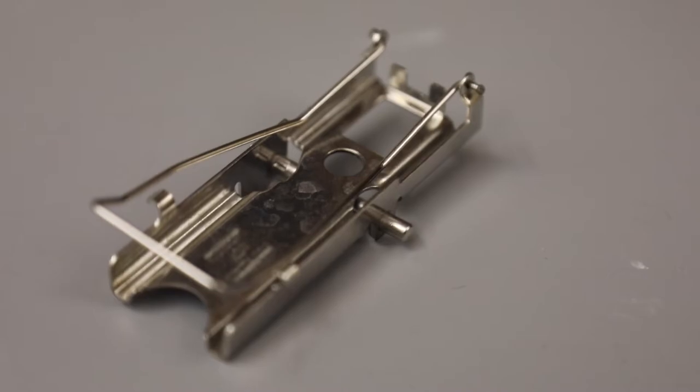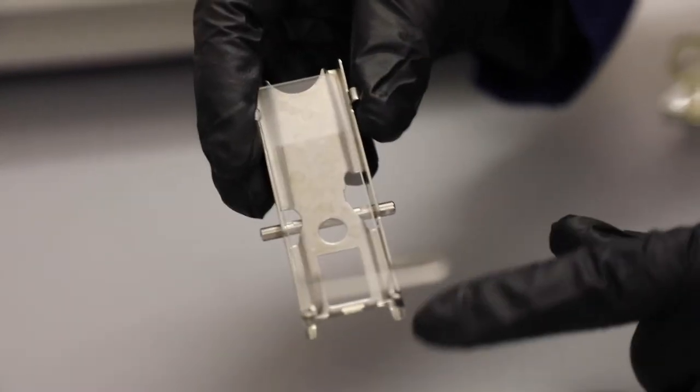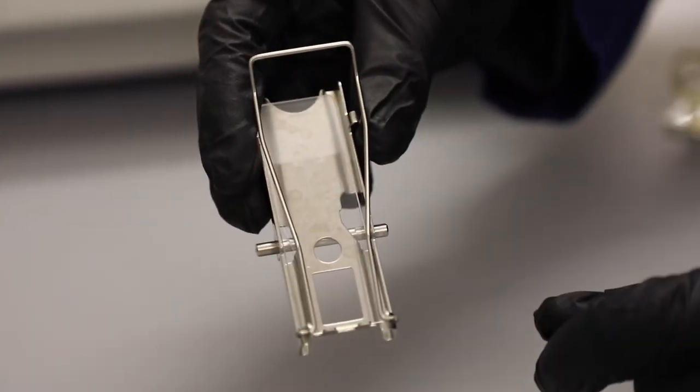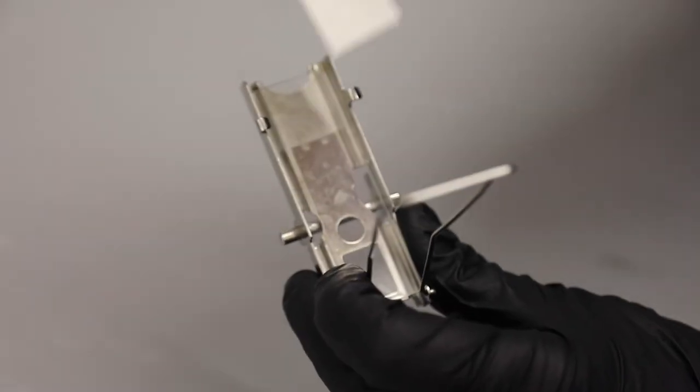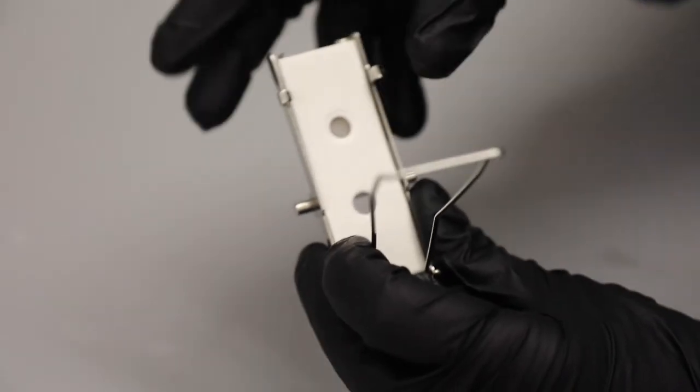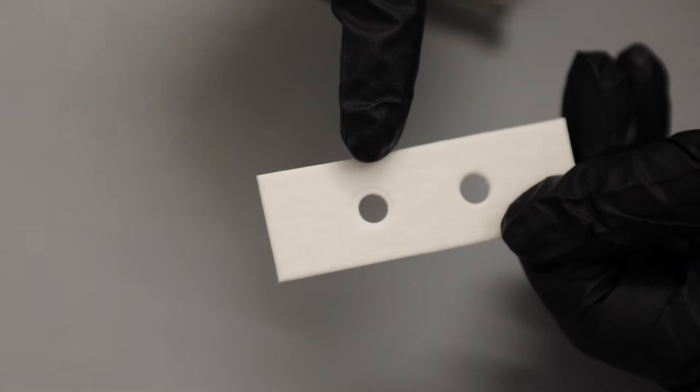Microscope slides must be specially prepared before being used in the Cytospin. First, put the slide in the metal cassette with the frosted end opposite the hinge. Put a filter on top of the slide with an unused hole over the corresponding hole in the cassette. Used holes will have an indent around the side.